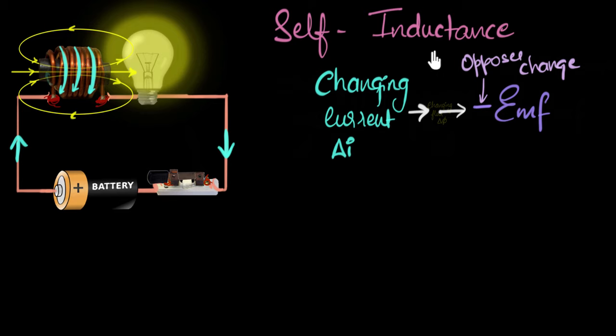So more inductance means more ability to resist the changes in the current. So it's kind of like an inertia. In fact, that's why inductance is often called electrical inertia, resistance to change. But change of what? Change of current.